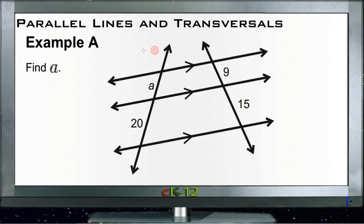Alright, here are example questions for parallel lines and transversals. Example A asks us to find little letter a, which is this segment here from this point to this point. We know that because these lines are parallel, they're marked with these little diagonals here, and because these other lines cross them, they're transversals.